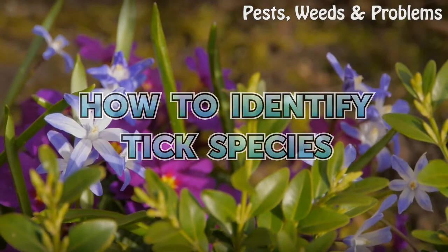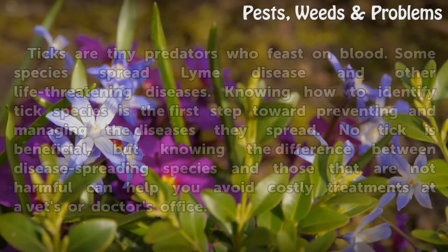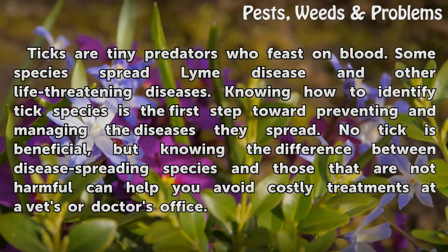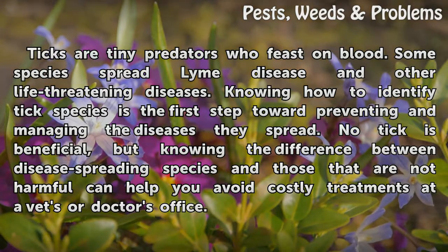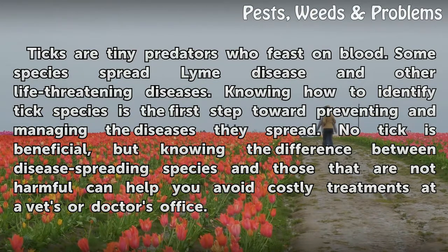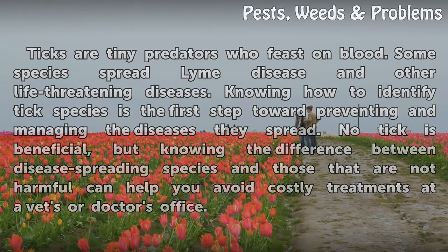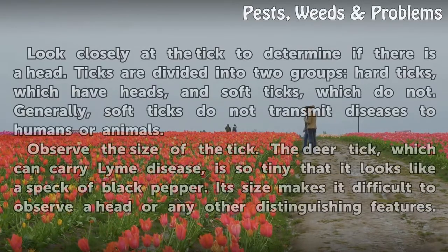How to Identify Tick Species. Ticks are tiny predators who feast on blood. Some species spread Lyme disease and other life-threatening diseases. Knowing how to identify tick species is the first step toward preventing and managing the diseases they spread. No tick is beneficial, but knowing the difference between disease-spreading species and those that are not harmful can help you avoid costly treatments at a vet's or doctor's office.